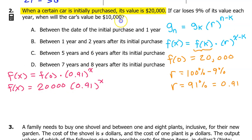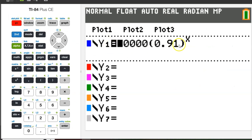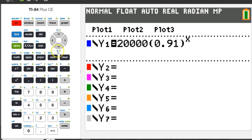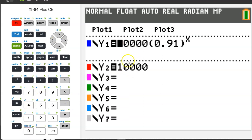This is the model giving the value of the function at any year x. We need to find when the car's value will be $10,000 — in other words, when will f of x equal 10,000? This problem is calculator active. Let's type f of x in as y1. Hit the y equals button and type it in. Now we want to find where f of x equals 10,000, so let's put 10,000 as y2.